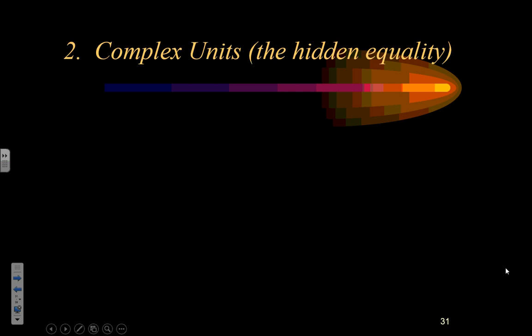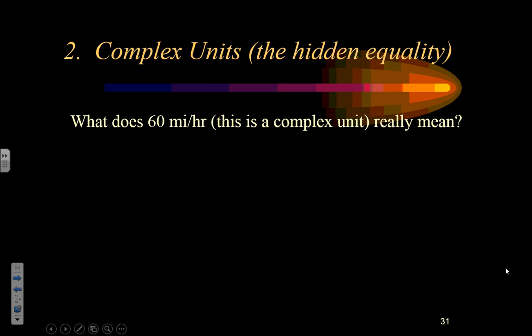The next situation is when we have what's called a complex unit — hence the name 'complex dimensional analysis' — and this is really about a hidden equality. When you get a very specific type of unit, it's actually a hidden equality and you need to recognize it as such. For example, 60 miles per hour is a complex unit — a ratio of two different units, miles and hours. Think about it: 60 miles per hour means for every 60 miles of distance traveled, I've used one hour of time.